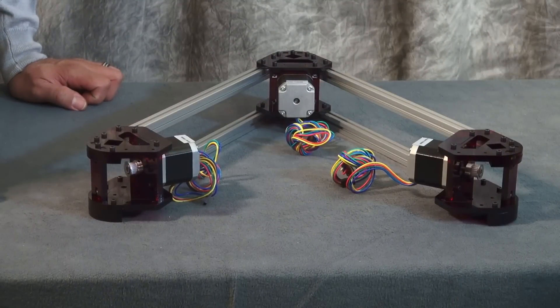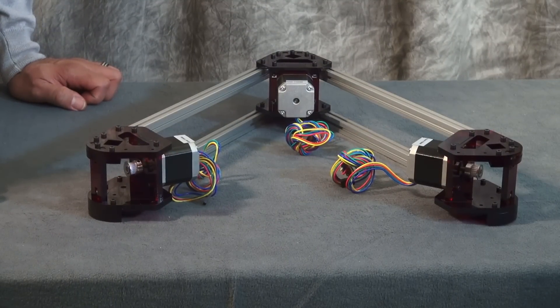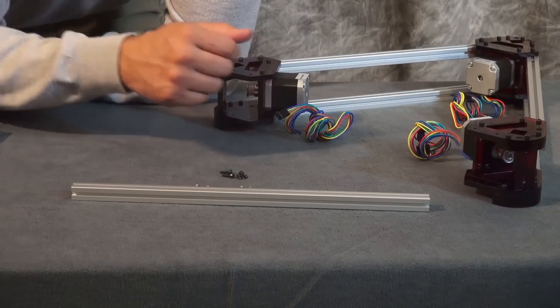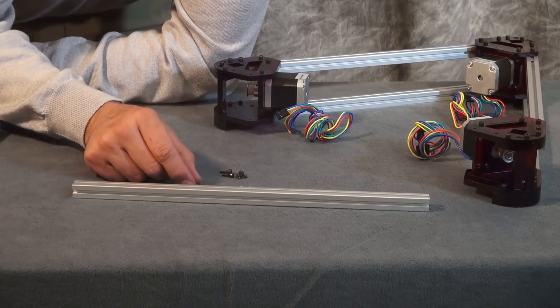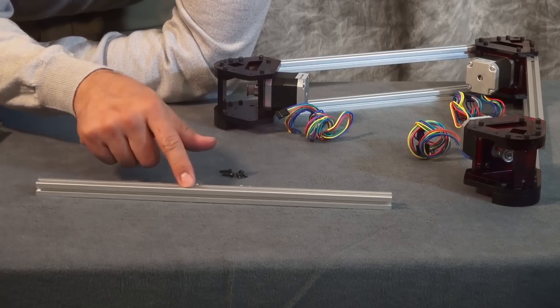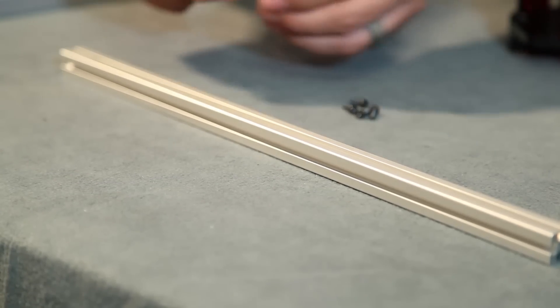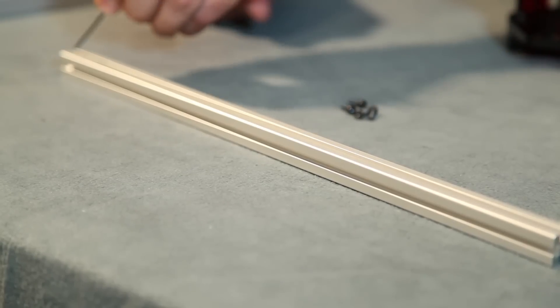Now that we're done mounting the third motor assembly, we're going to start with the right side. For this, we're going to do it a little differently. First, we'll set bar one and bar two aside. For the first step, for the right side, we're going to take bar two and we need to add four nuts to the top. We're going to put our four nuts on the top and slide them over to the center.